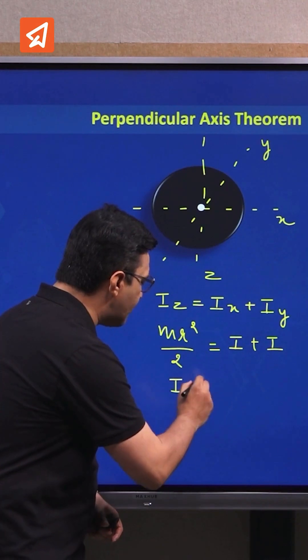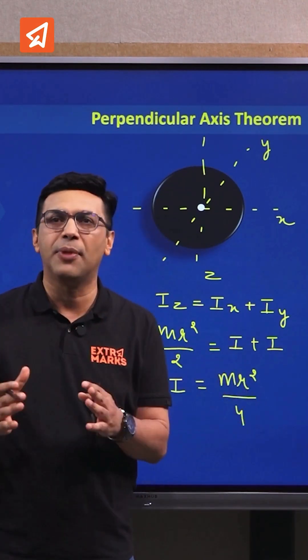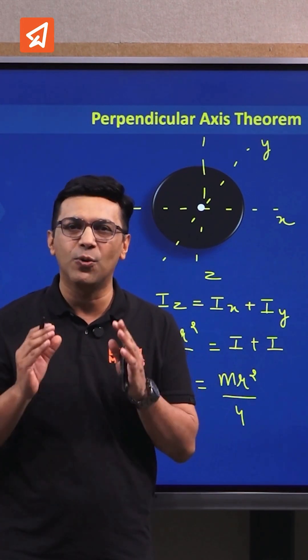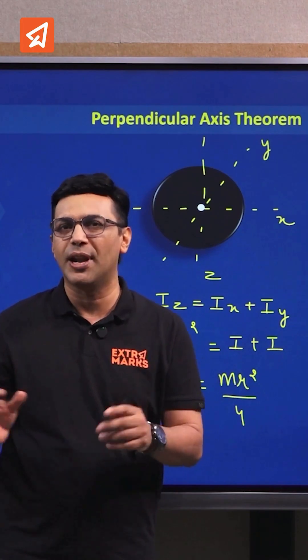Solving this, we can get the value of I as mR²/4. So students, you can see how we apply the theorem of perpendicular axis. Remember, theorem of perpendicular axis can only be applied to two-dimensional objects, not to three-dimensional objects and not to one-dimensional objects.